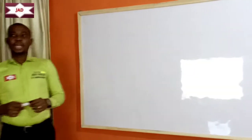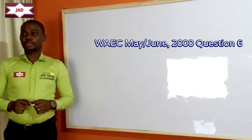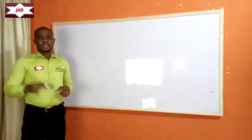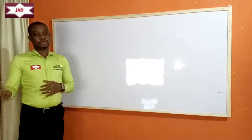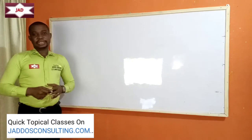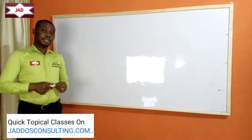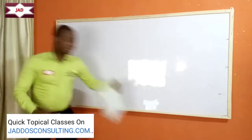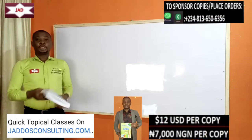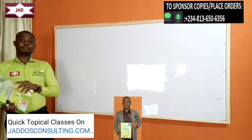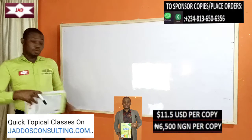In this class, we are solving a WAEC exam question for May/June 2000, question 6. You can take the full class by visiting jadosconsulting.com for topical teaching covering this question. You can also get my textbook or study pack for 7,000 Naira per copy or 12 US dollars. You can sponsor or gift copies for 6,500 Naira or 11.5 US dollars.